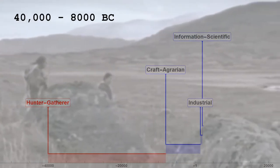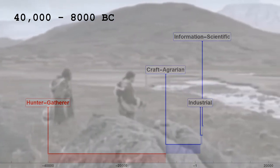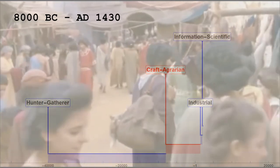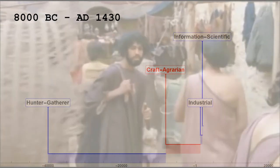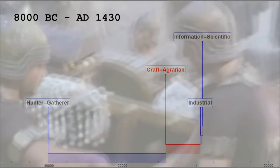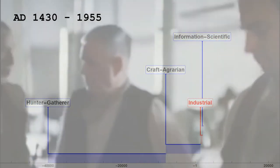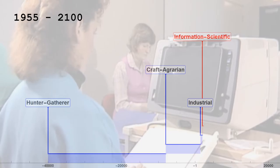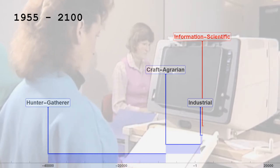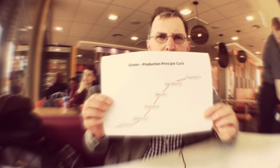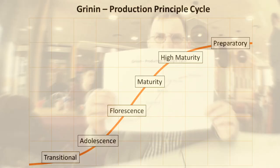Each of these waves has been shorter than the last. The hunter-gatherer lasted around 30,000 years, from 40,000 to 8,000 BC. The craft agrarian lasted 9,500 years, from 8,000 BC to AD 1430 — the invention of the printing press. The industrial lasted 500 years, from 1430 to 1955 — the adoption of the transistor. The information scientific is still in progress, but Grinin expects it to end around 2100. Despite the different timescales, Grinin argues that every wave has gone through the same six stages: transitional, adolescence, fluorescence, maturity, high maturity, and preparatory — preparing for the next wave.